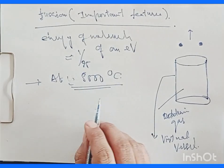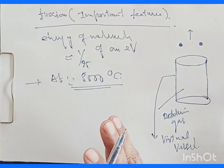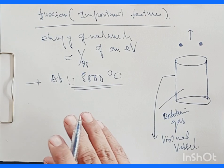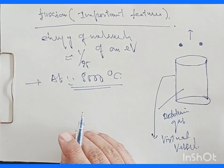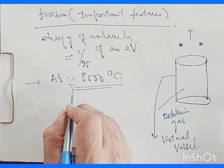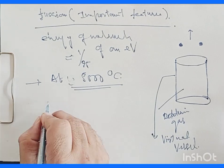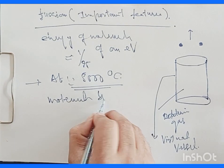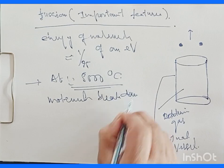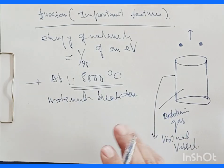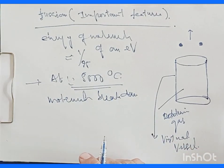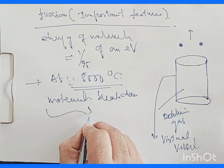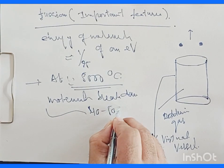Now if we have a temperature of 5,000 degrees Celsius, this huge temperature can be a consequence of violent collisions. At this temperature, the molecules break down into atoms, and the pressure goes up to nearly 40 to 50 atmospheres.